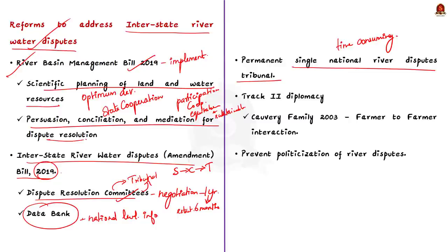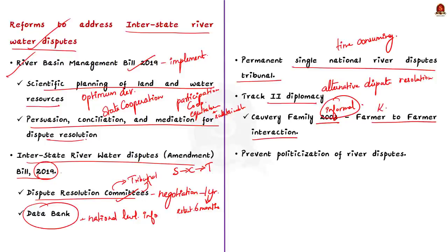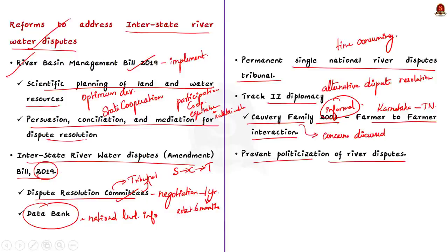Some alternative dispute resolution methods like Track 2 diplomacy can also be followed. Track 2 diplomacy is the practice of non-governmental, informal and unofficial contacts and activities between private citizens. The Cauvery Family was one such attempt — formed in 2003, it brought together farmers from both Karnataka and Tamil Nadu to initiate a farmer-to-farmer dialogue and solve the dispute, creating an atmosphere where farmers of both states would sit down and hear each other's concerns. Finally, politics must be separated from interstate river water disputes; only scientific and environmental methods can bring a permanent solution.